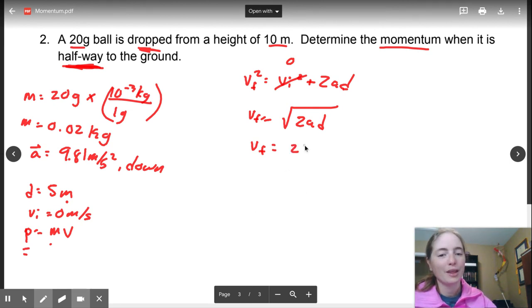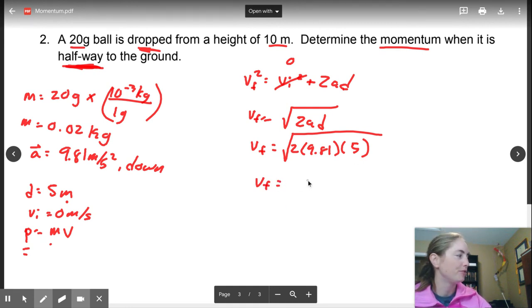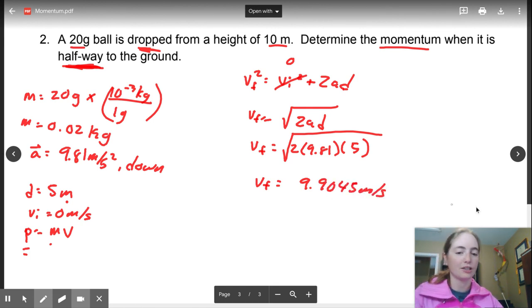I'm going to plunk in our numbers. 2 times 9.81 times 5 square root. Once you plunk that in your calculator, you're going to wind up with a VF of 9.9045 meters per second. Do we round here? No!